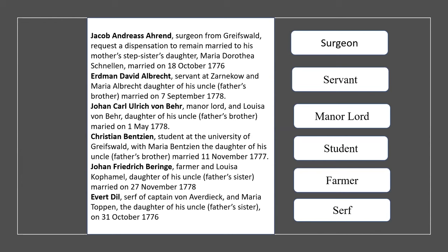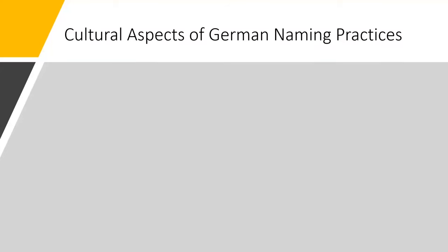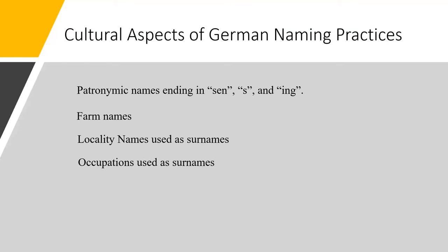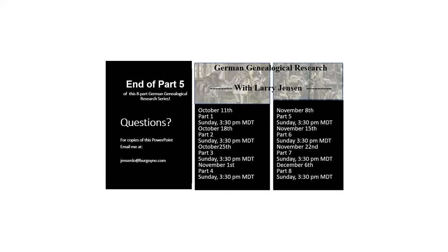A major cultural aspect has to do with the various German naming practices. The following will be elaborated on in webinar number nine on resolving German naming problems. They will include patronymic names ending in SEN-S and ING, farm names, locality names used as surnames, occupations used as surnames, Latin forms of surnames, and orphan names. This concludes webinar number five of the series of ten lectures on German genealogical research.